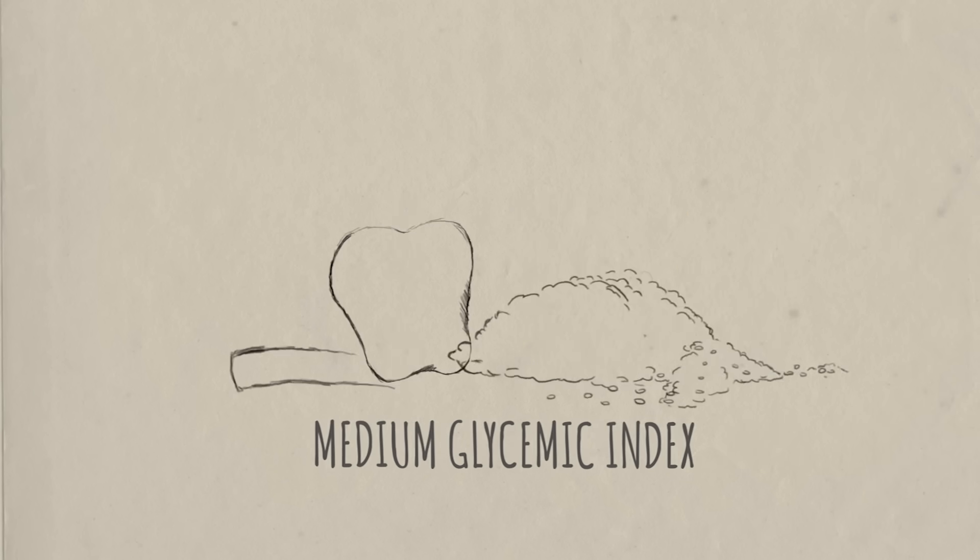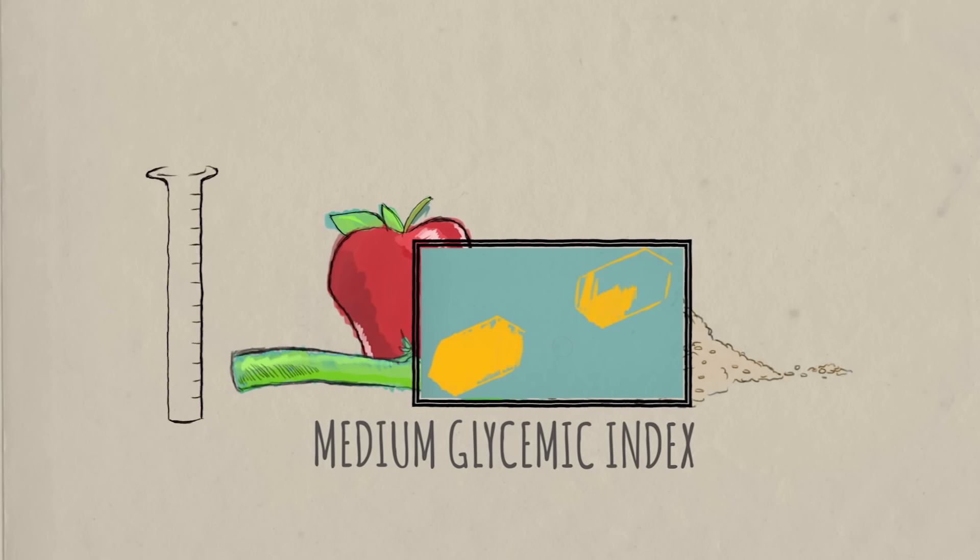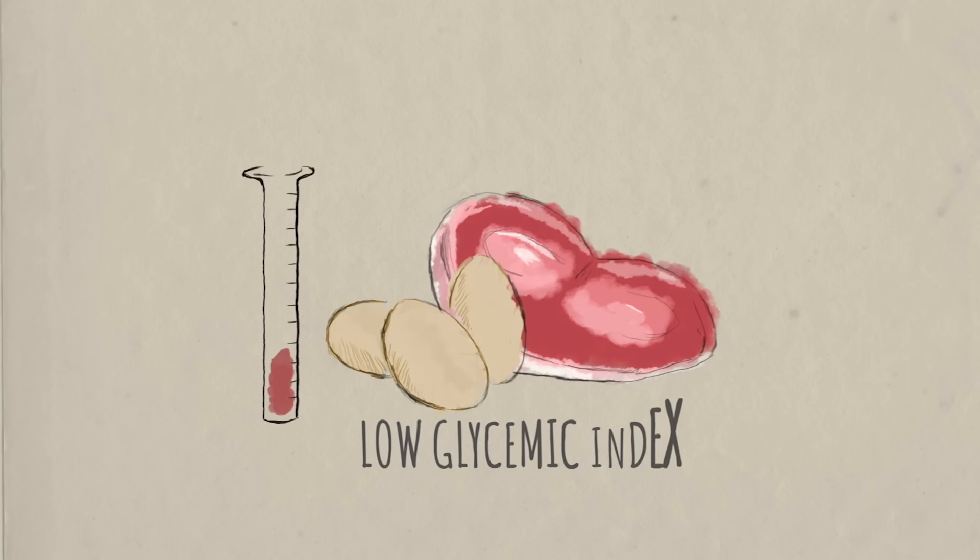But when you eat foods high in fiber, like vegetables, fruits and whole grains, those indigestible beta bonds slow the release of glucose into the blood. Those foods have a lower glycemic index, and foods like eggs, cheese and meats have the lowest glycemic index.